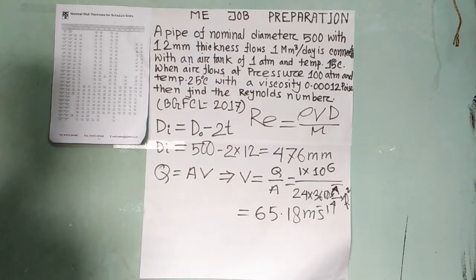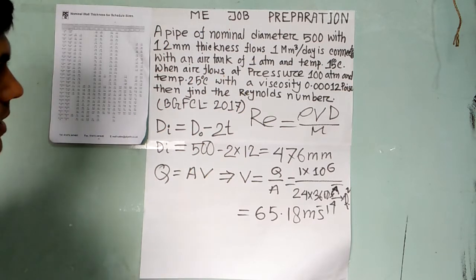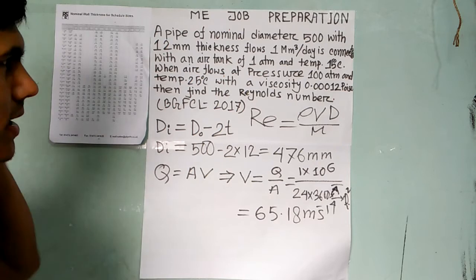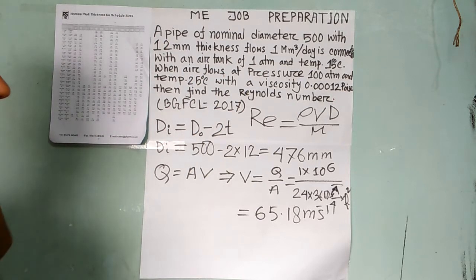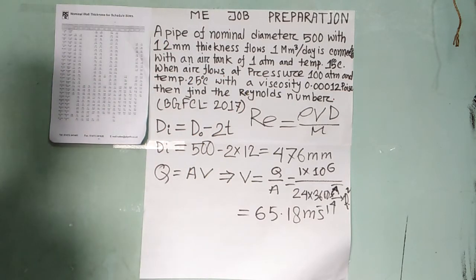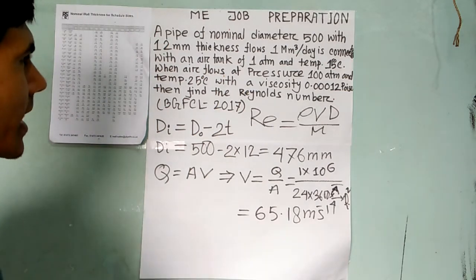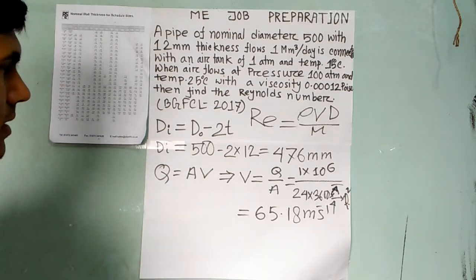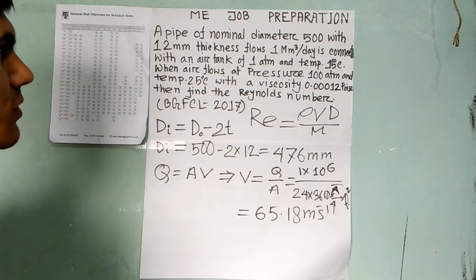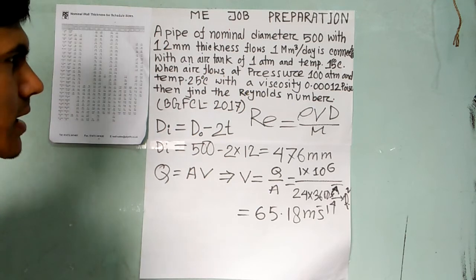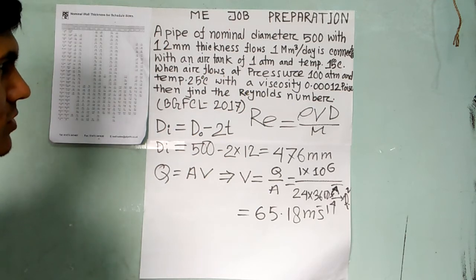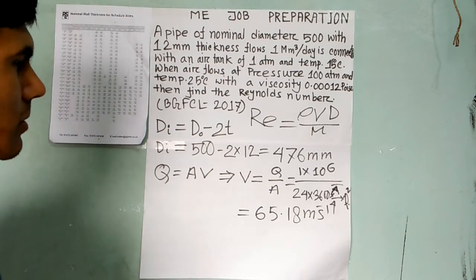V and D are now found. The pipe has flowing fluid — Air. Air flow. Air is a compressible fluid. For a compressible fluid, density changes. Air, gas — compressible fluid — density changes.